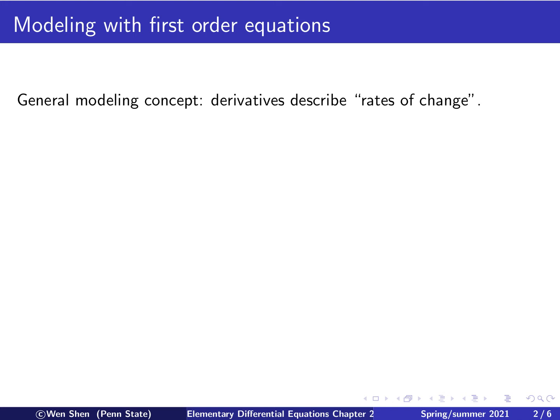So we know for first order equations, there is the first derivative of the unknown in the equation. And the general modeling concept is the following: that first derivative is considered as describing the rate of change. If the unknown is the quantity depending on time, that will be the rate of change in time. And if it is a function of space, then it will be the rate of change in space.